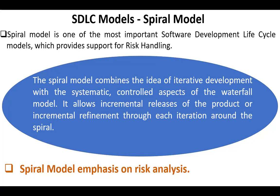Hello, everyone. Today, our topic is the spiral model. The spiral model is one of the most important software development lifecycle models, which provides support for risk handling. The spiral model combines the idea of iterative development with the systematic, controlled aspects of the waterfall model. It allows increment releases of the product or incremental refinement through each iteration around the spiral.